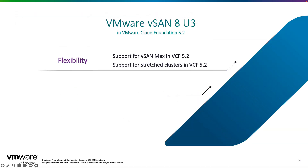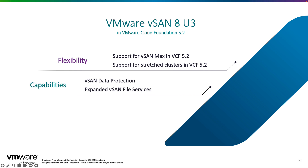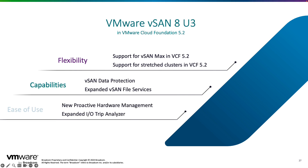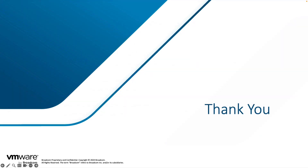To sum up the capabilities introduced in vSAN 8 Update 3: through enhancements with disaggregation, we can separate compute resources in all new ways. Core platform enhancements drive even better performance for workloads on the Express Storage Architecture without adding complexity. And lastly, we've simplified operations in a way that allows environments of all sizes to benefit. This has been a presentation of What's New with vSAN 8 Update 3. Thank you.